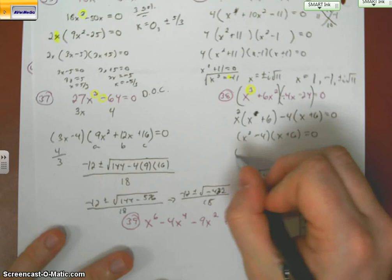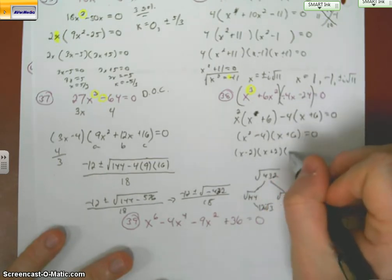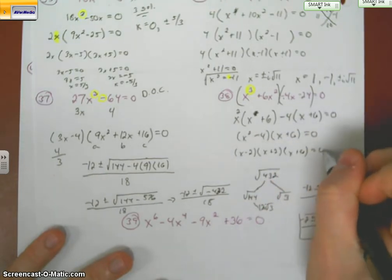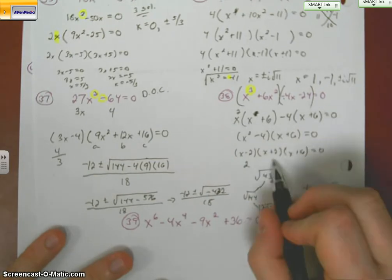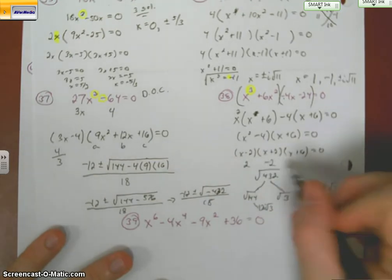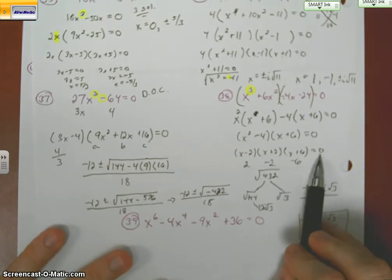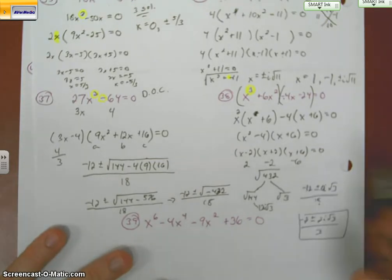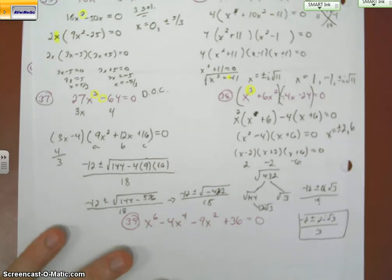This guy right here can go further since it's a difference of squares. That's going to give me an answer of 2. That's going to give me an answer of negative 2. And that's going to give me an answer of negative 6. Because remember, we're going to be setting these equal to 0. We're going to have to do the inverse. So x equals plus or minus 2 and 6.